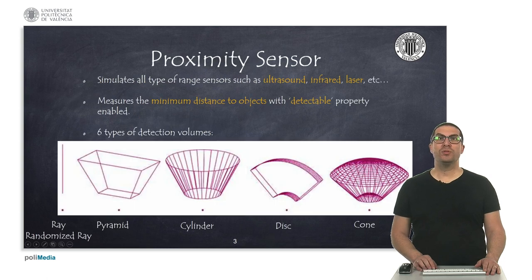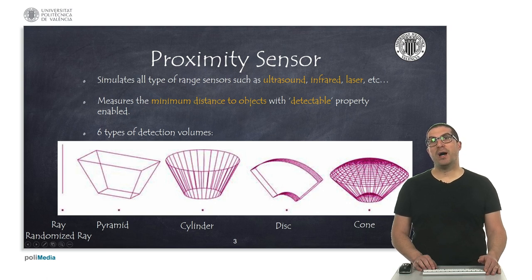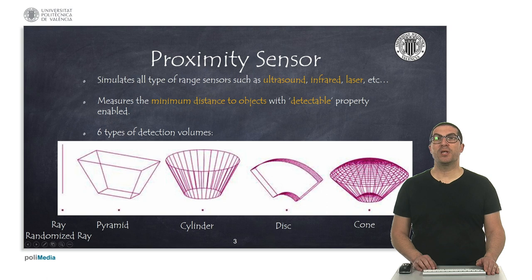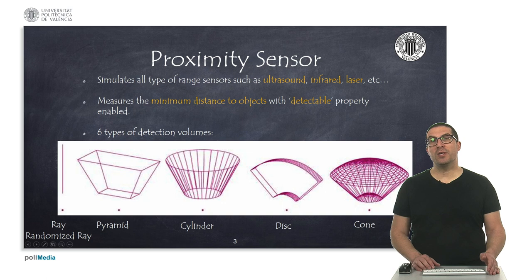CoppeliaSim allows you to simulate proximity sensors to obtain the minimum distance between the robot and any detectable object in the scene. It implements up to six different types of detection volumes that allow you to simulate different types of sensors, such as ray type, typically used to simulate laser sensors, or a cone type, typically used to simulate an ultrasound sensor.